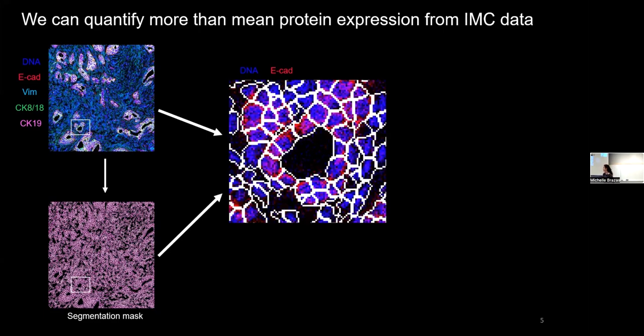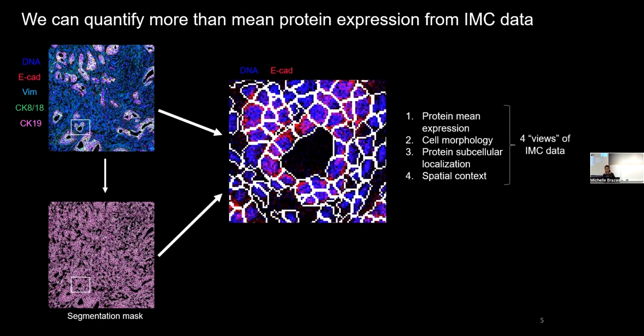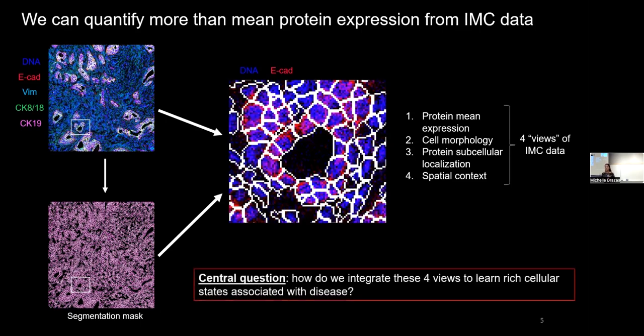So these four things that I mentioned, protein mean expression, cell morphology, protein subcellular localization, and spatial context are what I'll be calling the four views of IMC data. So the question becomes, how do we integrate these four views to learn novel cellular states associated with disease?